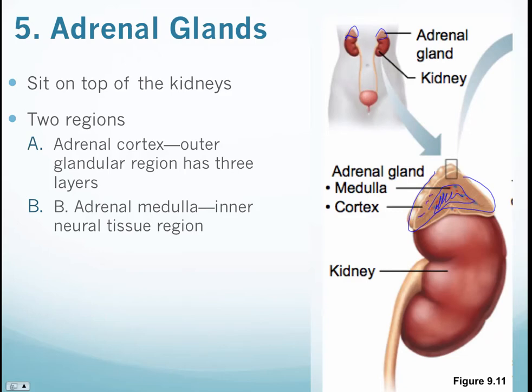This inner/outer distinction is also common within the kidney and also your brain. The outer region of your brain is the cortex, inner is the medulla. Similarly, a cross-section of the kidney shows the medulla on the inside and the cortex on the outside.